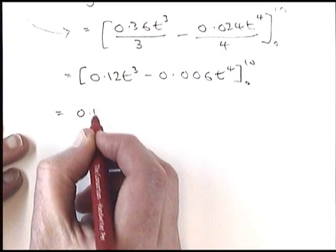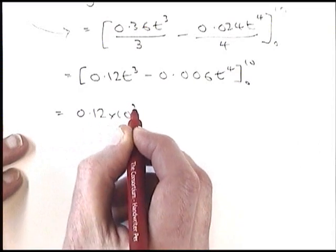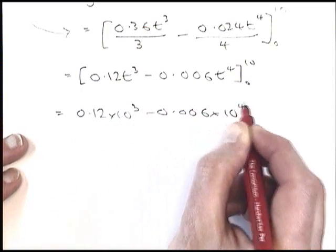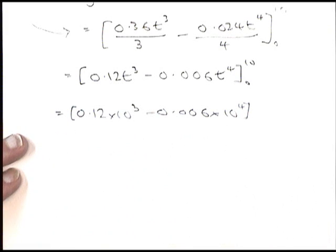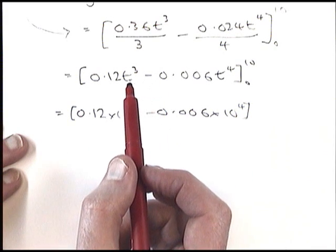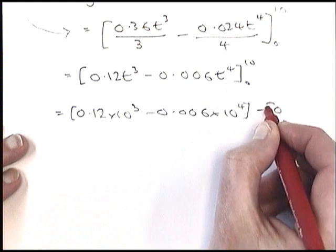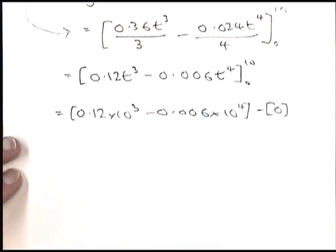So first of all, if I replace every t with a 10, I will get that. And when I replace every t with a 0, here I'll get 0, and here I'll get 0. Actually, the whole bracket will just come down to be 0. So I'm just going to write that one like that.